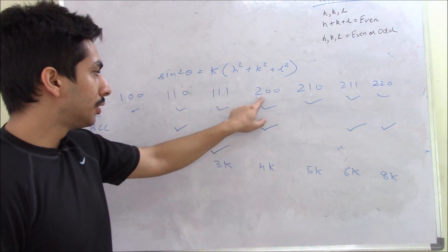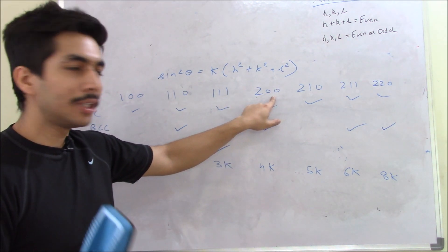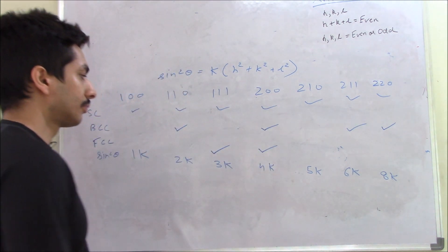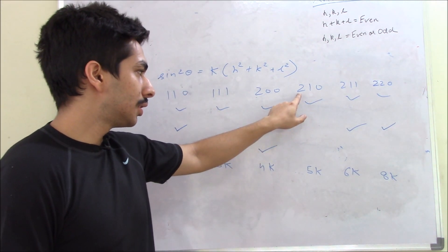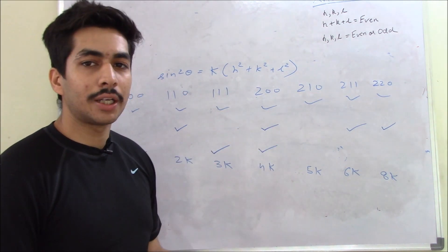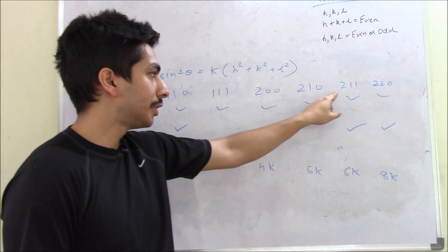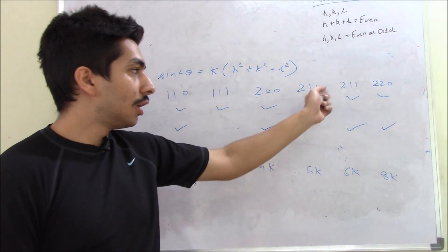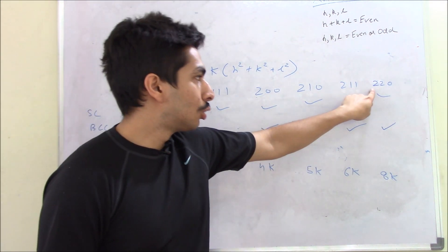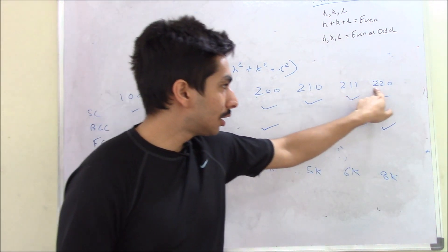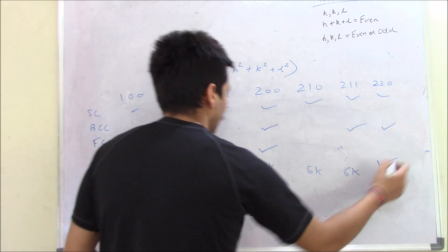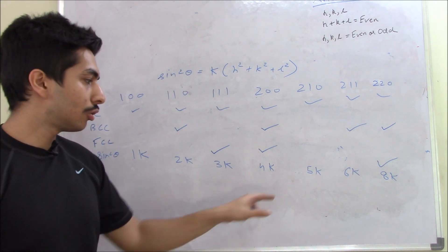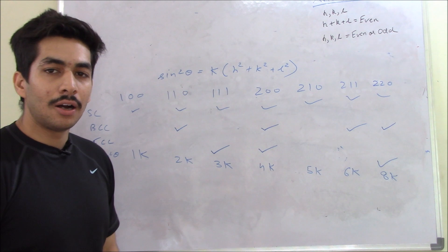For FCC: (2,0,0) — all three are even (zero counts as even) — peak at 4K. (2,1,0) — mixed odd and even — no peak. (2,1,1) — even-odd-odd mixed — no peak. (2,2,0) — all three are even — peak at 8K. So the FCC pattern shows peaks at 3K, 4K, 8K and so on.